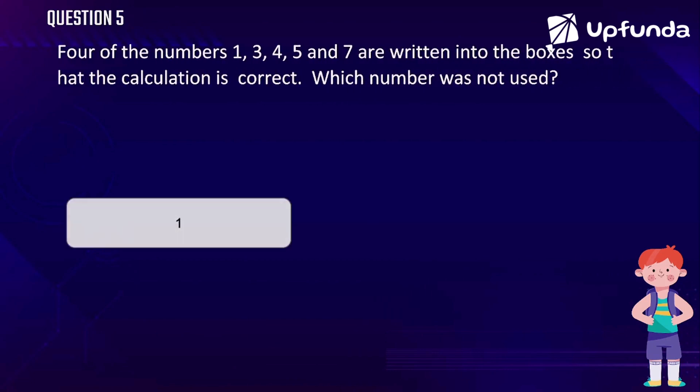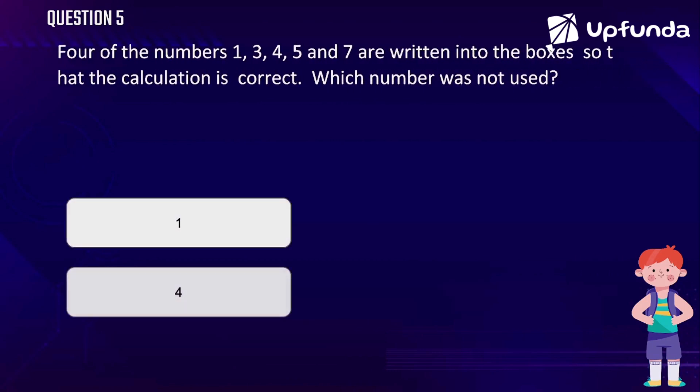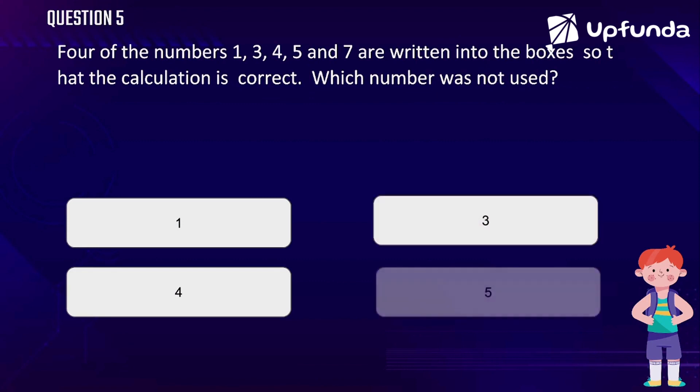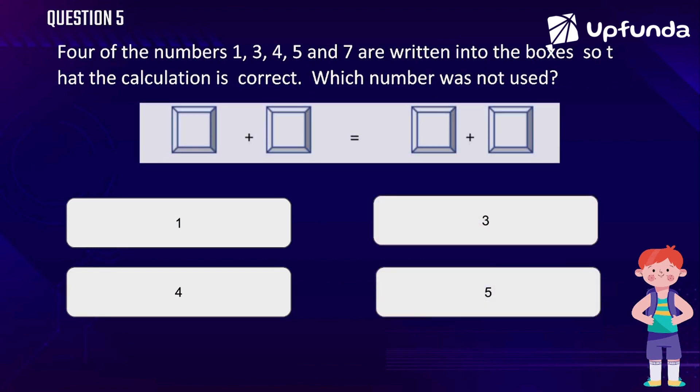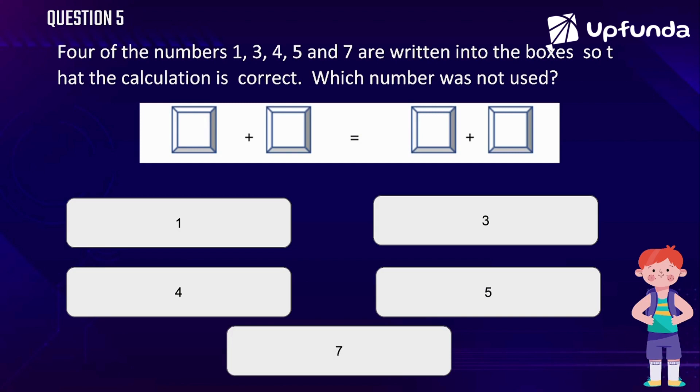Question 5 quickly. Four of the numbers 1, 3, 4, 5, and 7 are written into the boxes so that the calculation is correct. Which number was not used?